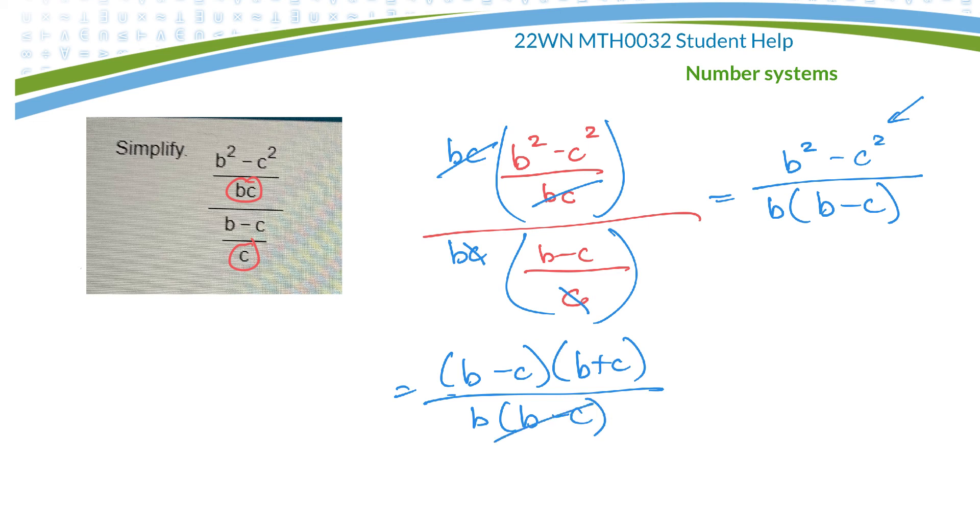The b minus c's cancel. So in the end, I'll be left with b plus c over b. Thank you.